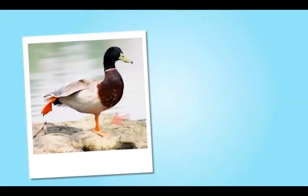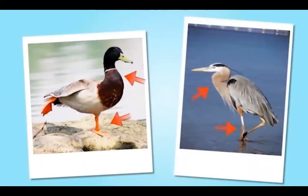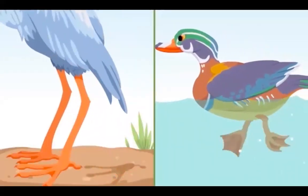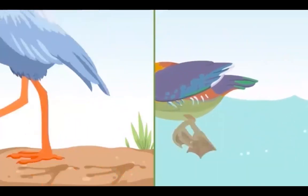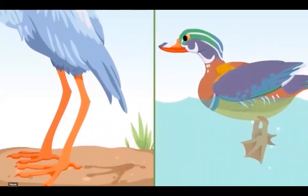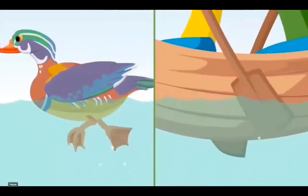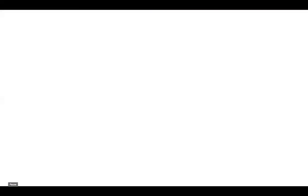Not all birds have that same body shape, even ones that live in the same environment. Look at the wood ducks — they have shorter legs and necks than the heron. Does that mean they're adapted to get their food in a different way? Yes. These ducks mostly eat plants, and their bills are just right for scooping them out of the water. The ducks use their webbed feet to swim, while the heron was just walking.